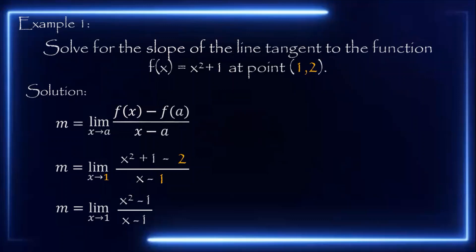Now, if we use direct substitution by substituting 1 for x, the result would be 0 over 0. Since it is in indeterminate form, the limit of the function still exists. So what we need to do to solve for the correct limit is use the factoring method.